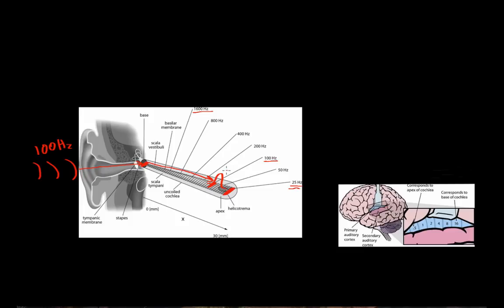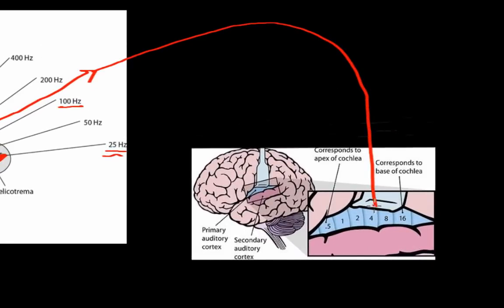These hair cells will fire an action potential, and this signal will eventually reach the brain and be mapped to a very particular part of the brain. Inside the brain there is something known as the primary auditory cortex, which is basically responsible for receiving all of the information from the cochlea. Similar to how the cochlea is tuned to various frequencies, the primary auditory cortex is also sensitive to sounds of various frequencies.